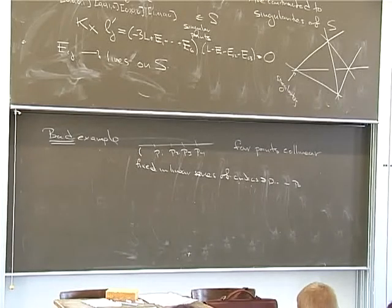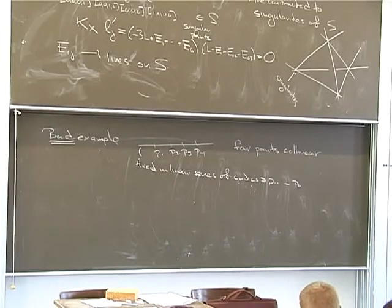So I should give a bad example very briefly. The bad example is if I allow four of the points to be coplanar, and here we actually have fixed components in the linear system. So this is not something that we want to consider. We don't even get a morphism. So this is the kind of thing we want to avoid. Three collinear points is good. Four collinear points, we get into trouble.